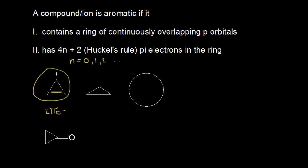When I look at the carbons in the ion, this carbon has a double bond to it, so it's sp2 hybridized, same with this carbon. And then this top carbon, this carbocation, is also sp2 hybridized. We know that sp2 hybridized carbons have a free p orbital, so each carbon in this ion has a p orbital on it. I can sketch in the p orbital on each carbon in my ring, and so that allows me to see that my p orbitals could overlap side by side. This ion fulfills the first criteria — it has a ring of continuously overlapping p orbitals.